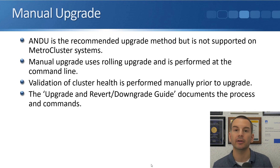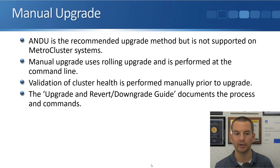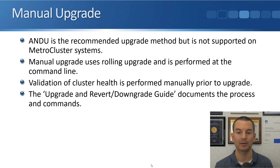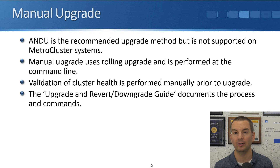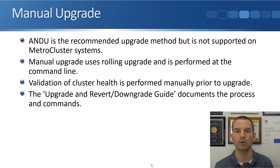ANDU is the recommended upgrade method using the wizard in System Manager, but it is not supported if you're using MetroCluster. If you're using MetroCluster you have to do a manual upgrade. That uses a rolling upgrade so the nodes are upgraded one at a time, performed by you at the command line. Validation of cluster health is performed manually prior to the upgrade — you don't get that automated validation process from System Manager. So the pre-upgrade checks are going to take you a while because you are expected to enter all of those commands at the command line to check that the cluster is healthy.